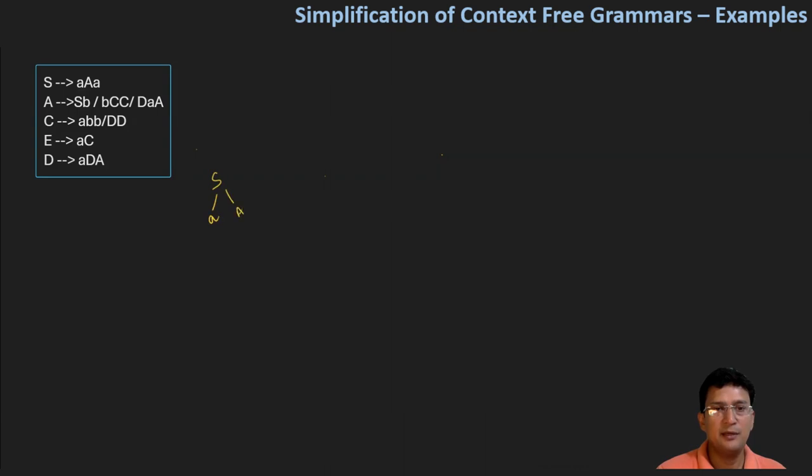S produces small a, capital A, small a. Then A produces SB or BCC or DAB. Let's say we take A produces SB. So S produces small a, capital A, small a, which generates small b, capital C, capital C. C produces the terminal symbol abb.